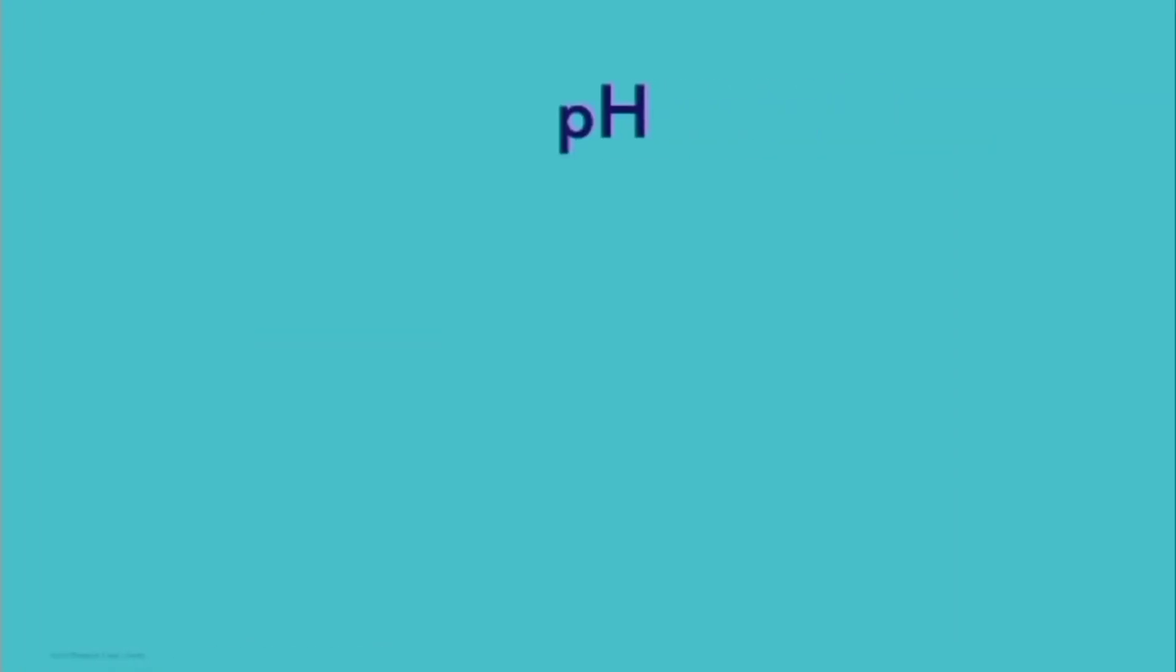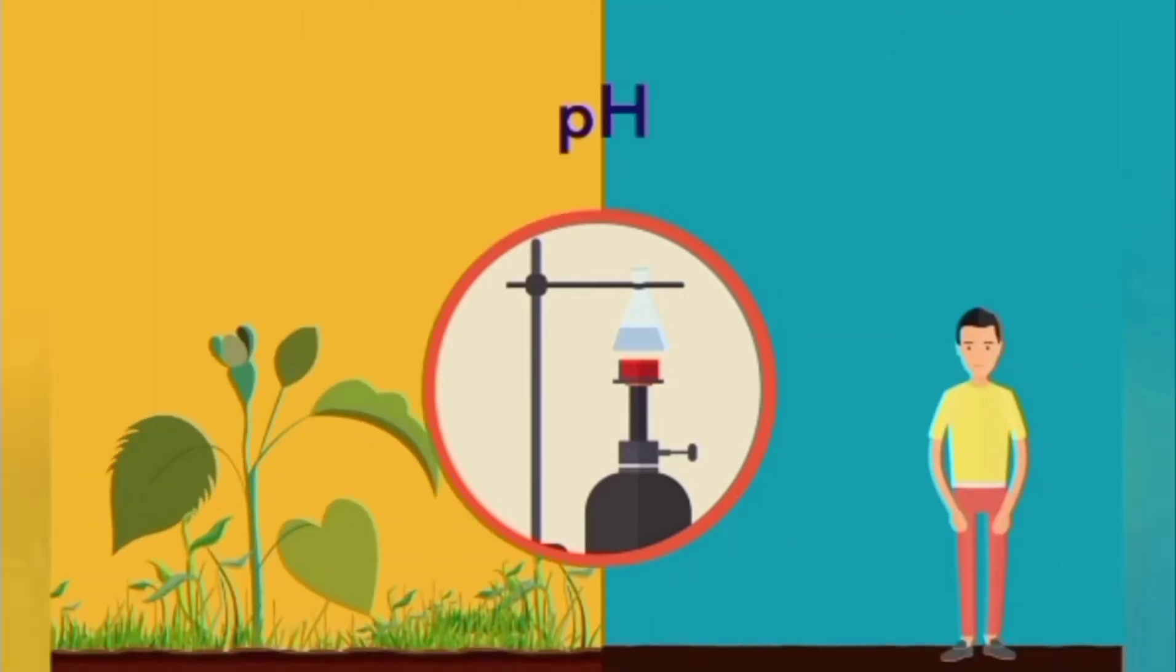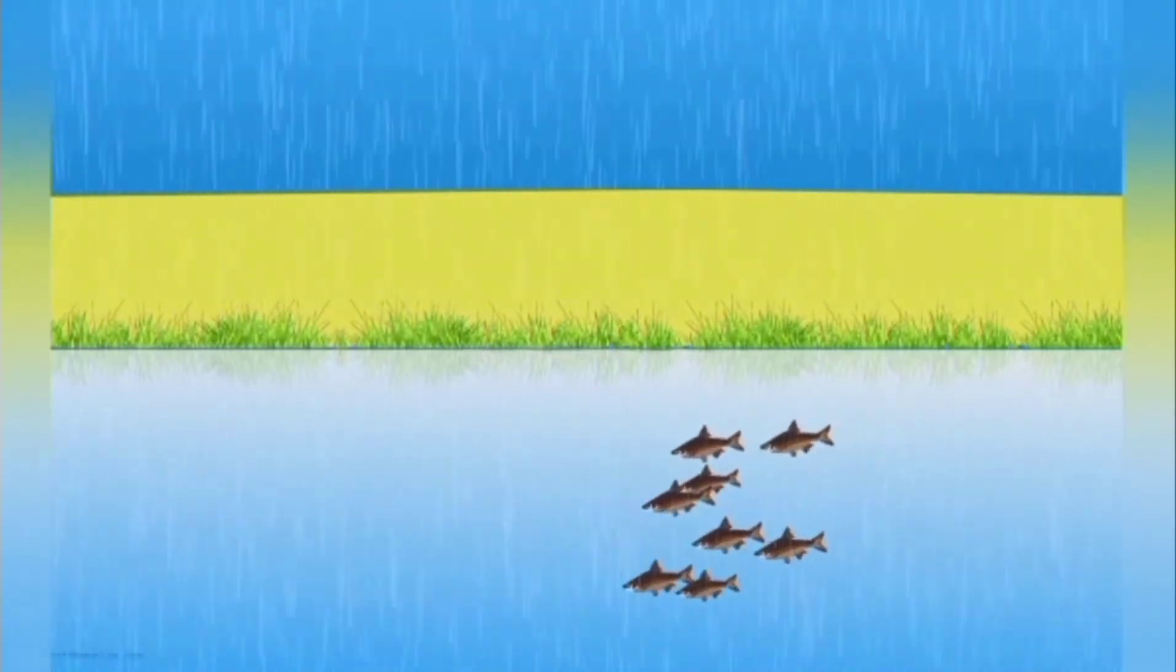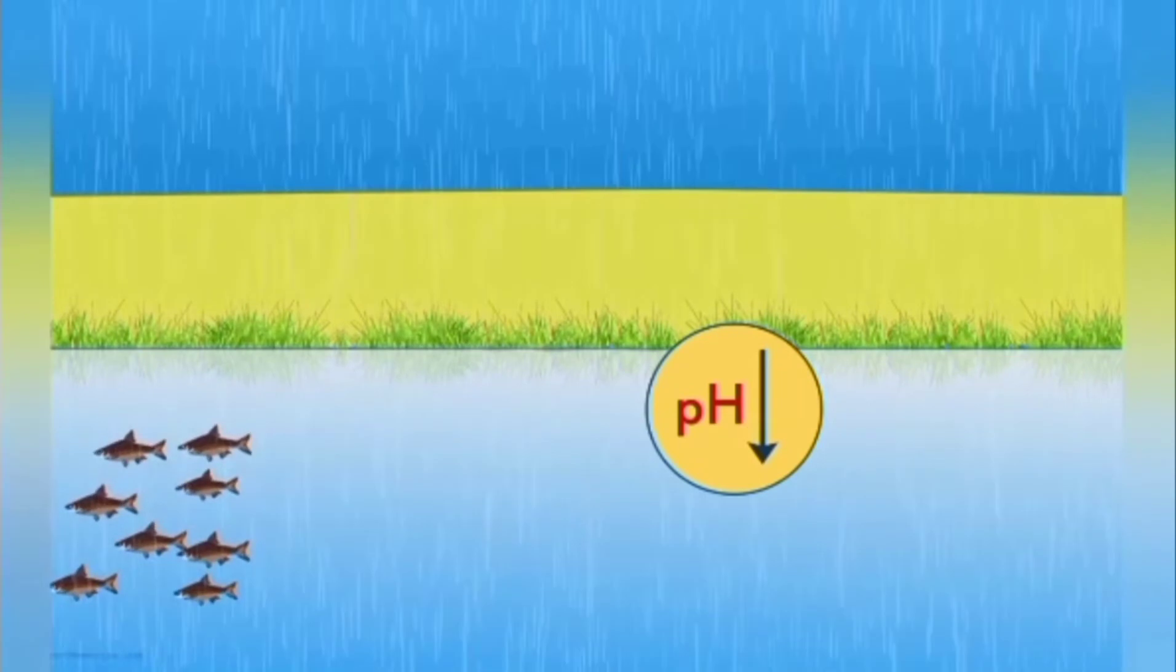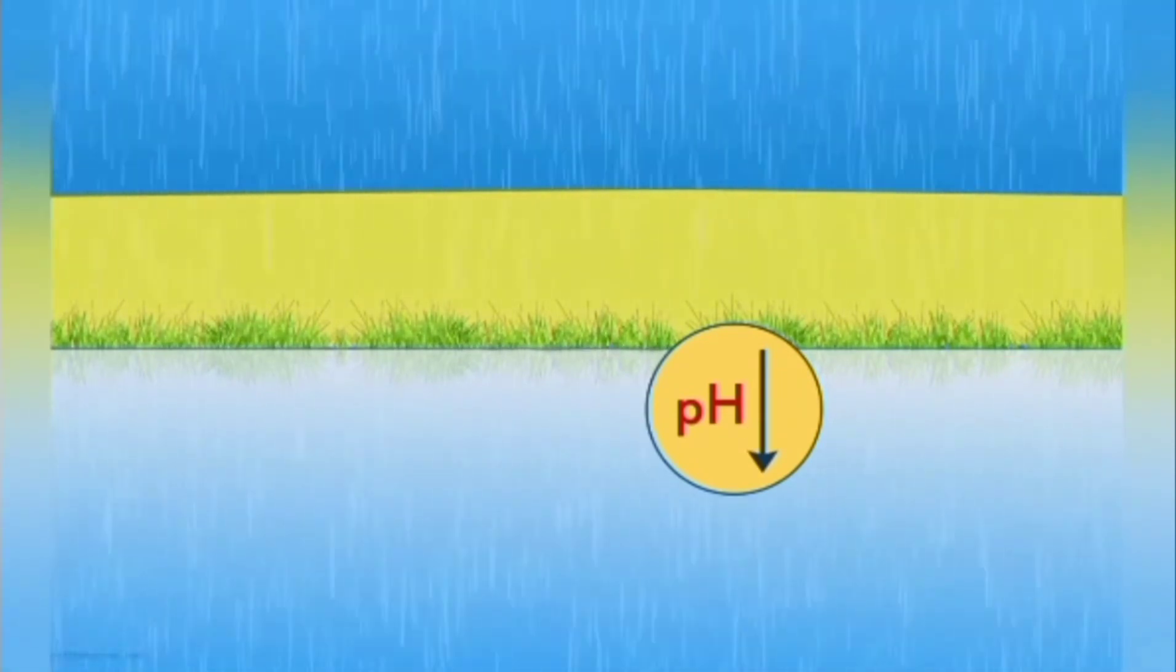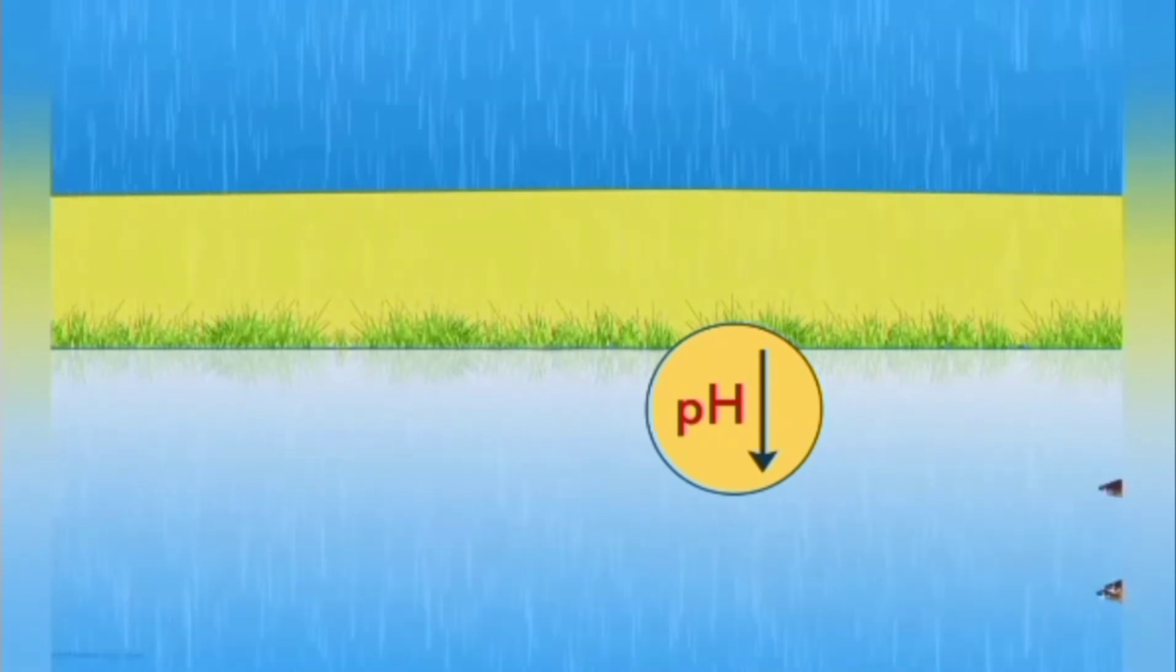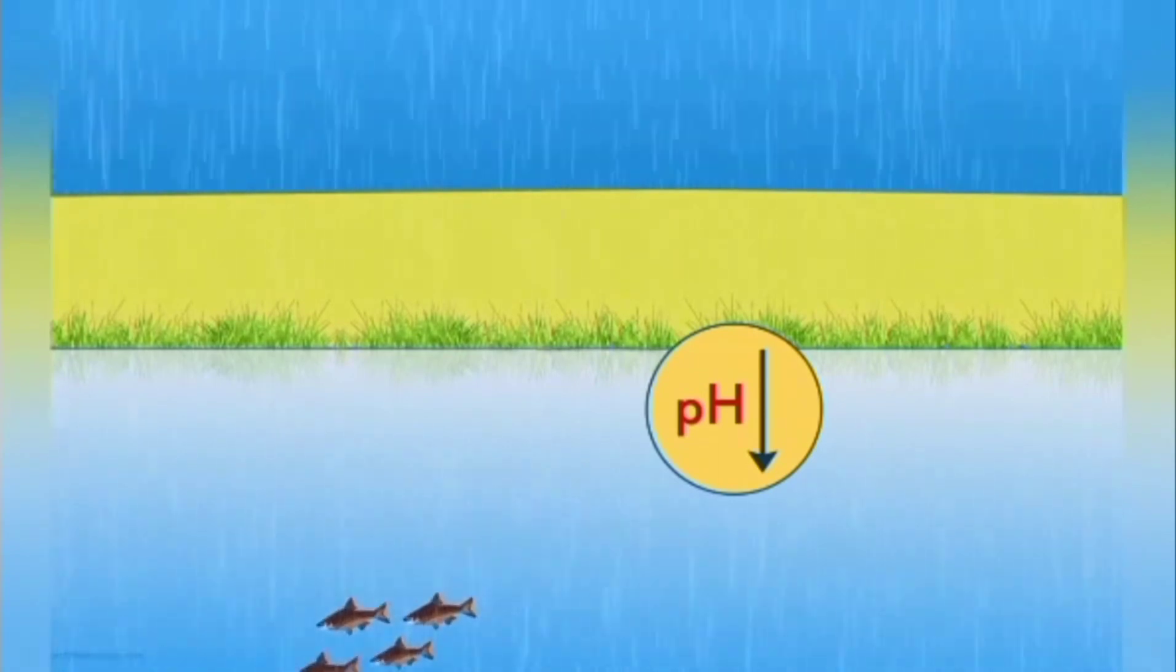Does pH only have to do with solutions in the laboratory? Or does it also affect plants and humans in daily life? Did you know that when acid rain flows into the rivers, the overall pH of the water reduces and living organisms cannot survive if the change in pH is too much? In such cases, survival of aquatic animals becomes difficult.